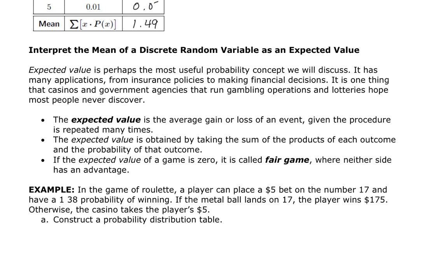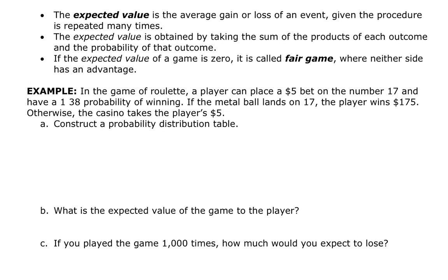Now, if the expected value of a game is a fair game, then the expected value should be zero. In this roulette example, a player can place a bet of $5 on the number 17 and have a 1 in 38 probability of winning. If the ball lands on 17, not only does that player get that $5 bet back, but they also win $175. If the player loses, then the player loses $5.